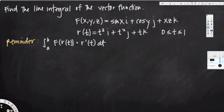Hello everyone. In this video we are going to see how to find the line integral of a vector function. Here we have a vector function given by sin(x)i, cos(y)j, and xz·k, and we also have an r(t) function. When we do the line integral, we have to replace x, y, z with the r(t) function, find the derivative of r(t), and do the dot product between these two functions.